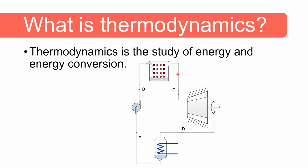That high pressure steam is then sent to a turbine, which extracts work in the form of shaft power. The low pressure steam exhausted from the turbine gets sent to the condenser where it is changed back to water. This water gets pressurized again through a pump and sent back to the boiler where the whole process starts over again.